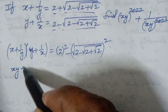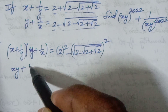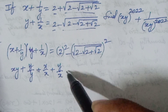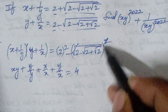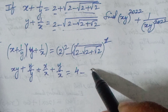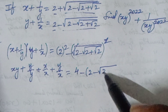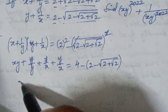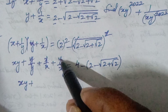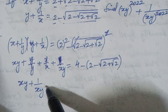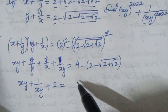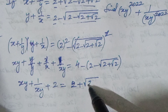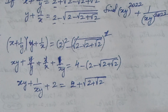On the LHS we get x times y plus 1, giving us x by x plus y by x. On the RHS, the square root cancels, and we get 4 minus the quantity 2 minus root 2 plus root 2. So we have xy plus 1, then y plus 1 by x, then plus 2 equals 4 minus 2, which gives 2 plus root 2, plus root 2.